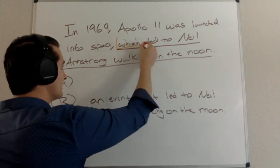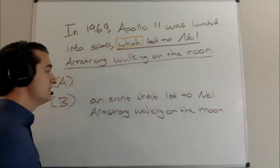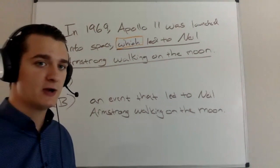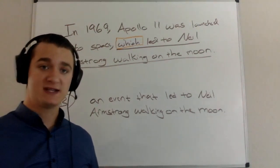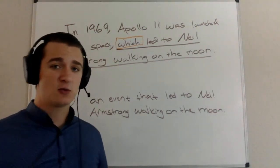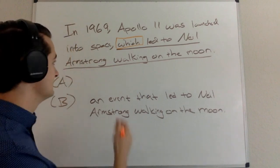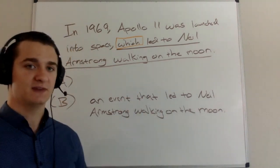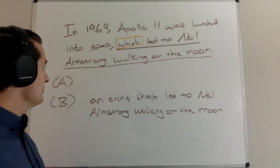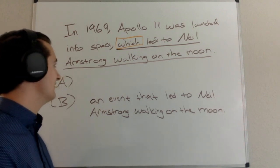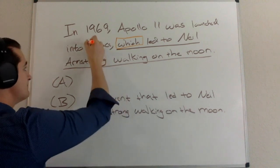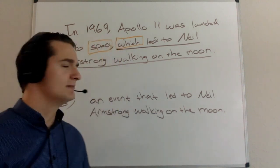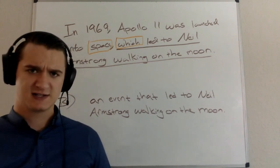You'll notice right away I have the word 'which' functioning as a modifier. Automatically, when I see 'which' functioning as a modifier, I'm going to ask myself: what is it that 'which' modifies? In other words, what is it that led to Neil Armstrong walking on the moon? Well, the nearest noun that 'which' would modify would be 'space.' Did space lead to Neil Armstrong walking on the moon? No, that does not make sense.